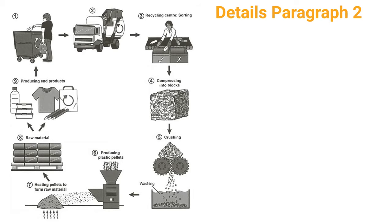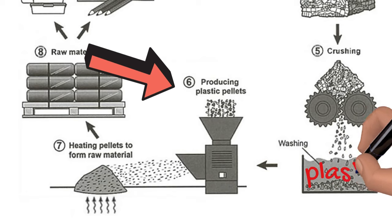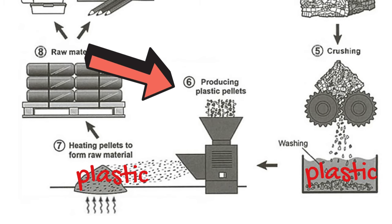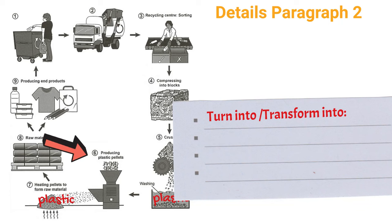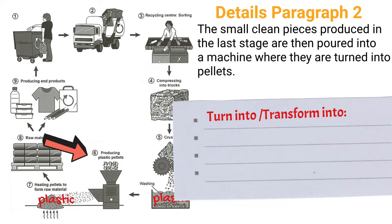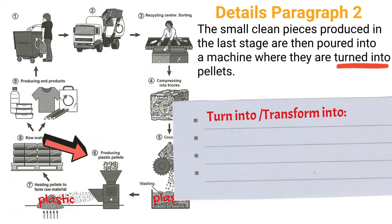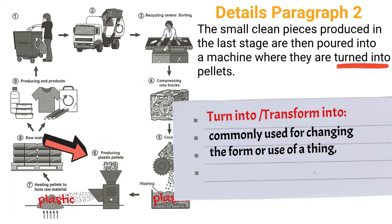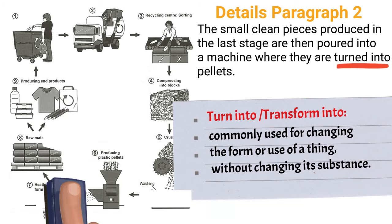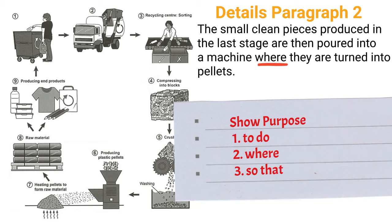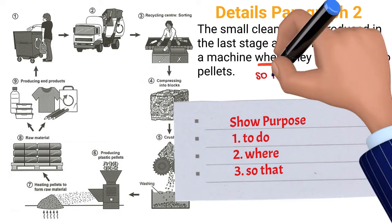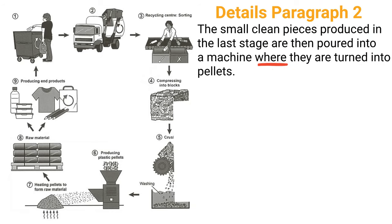Now let's move on to details paragraph 2. Step 6 is to produce plastic pellets. The small pieces from step 5 are plastic, and the pellets produced in step 6 are still plastic — only the form has changed, not the substance. In this case, we can use 'turn into' or 'transform into': 'The small clean pieces produced in the last stage are then poured into a machine where they are turned or transformed into pellets.' You can also use 'so that': 'poured into a machine so that they are turned into pellets.' But 'where' sounds better here.